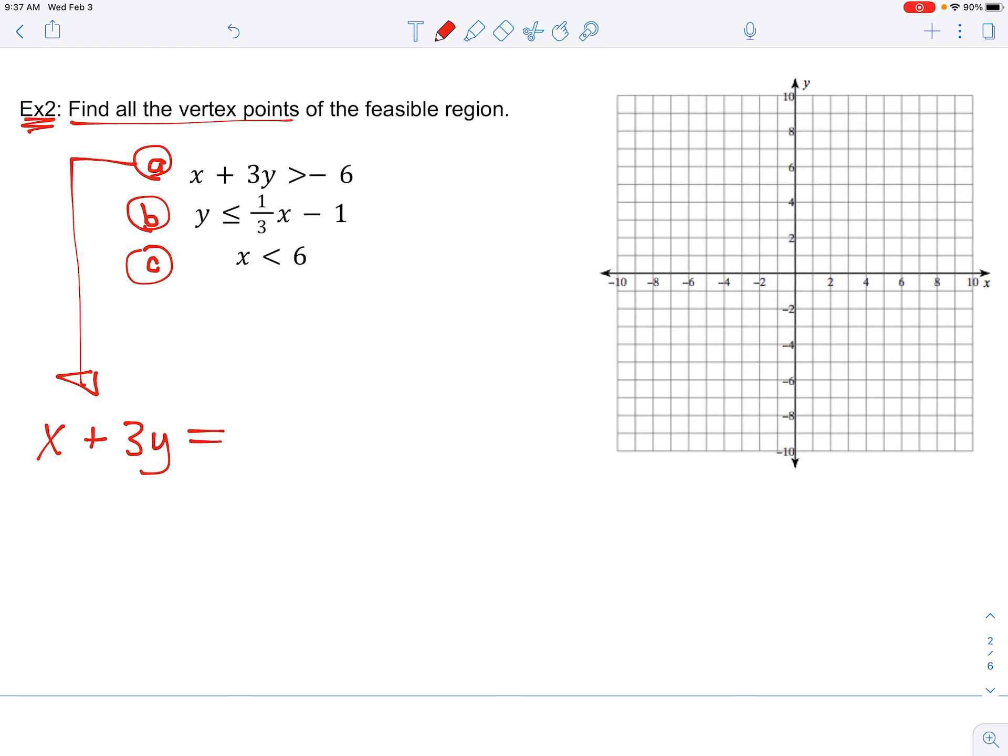To graph an inequality, first we're going to graph the equation x plus 3y equals negative 6, and by the cover-up method I mean finding the intercepts. All you need are two points to make a line. Those two points can be easy when you consider finding what y is when x is zero and what x is when y is zero.